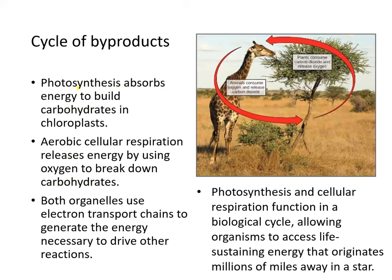Cycle of byproducts: photosynthesis absorbs energy to build carbohydrates in the chloroplast; aerobic cellular respiration releases energy by using oxygen to break down carbohydrates. Both organelles — mitochondria and chloroplast — use the electron transport chain to generate the energy necessary to drive other reactions. Basically, photosynthesis and cellular respiration function in a biological cycle, allowing organisms to access life-sustaining energy that originates from millions of miles away in a star.